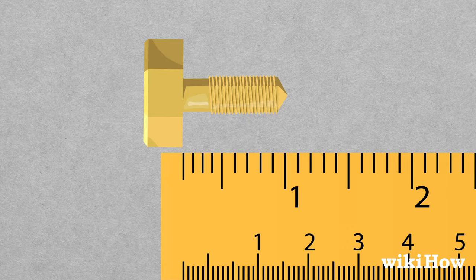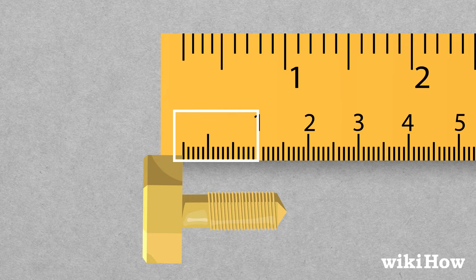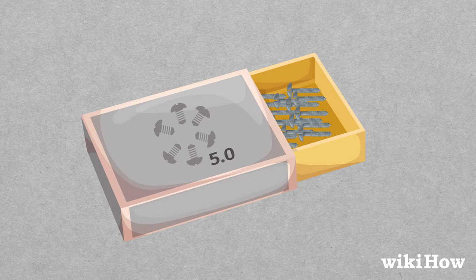On the other hand, if you're using the metric system, the diameter of the screw is usually listed in millimeters. This means that a 5 millimeter screw would be labeled as a 5 on the packaging.